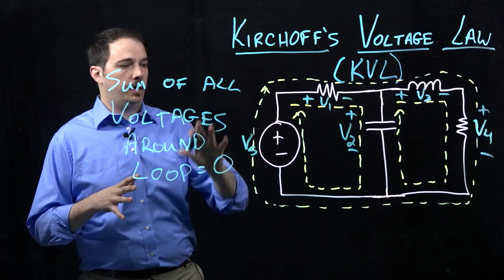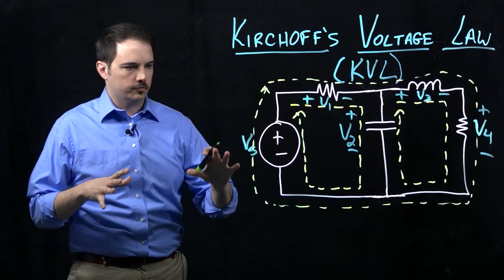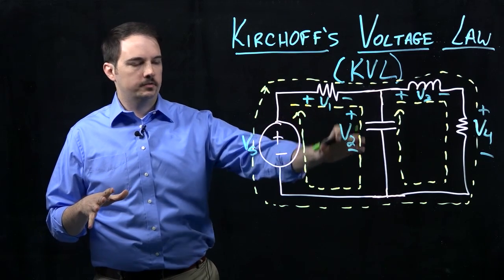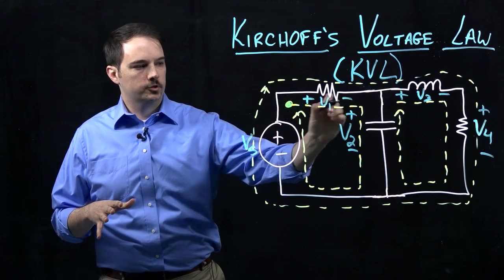So now let's begin to work out the actual equations for describing the paths around a couple of these different loops. Okay, so first let's look at the loop on the left side of the circuit here.